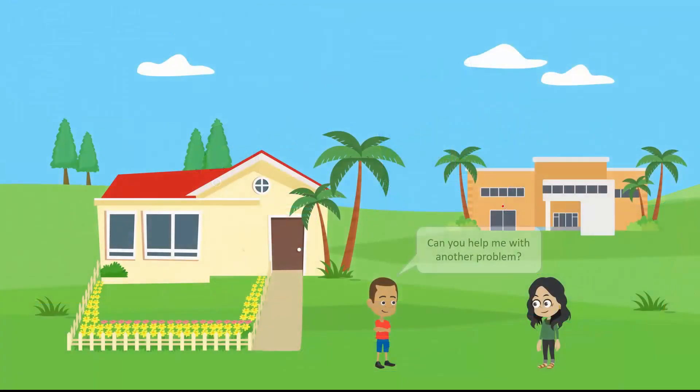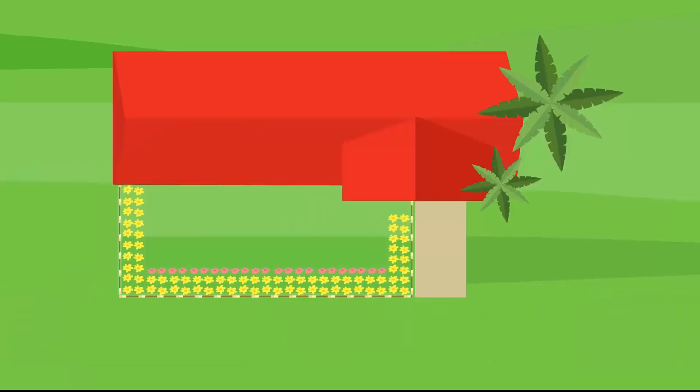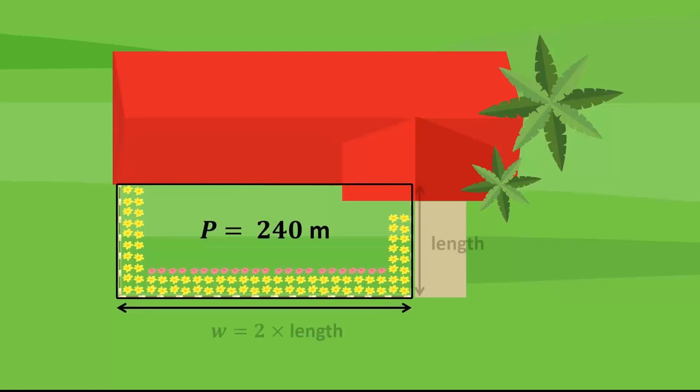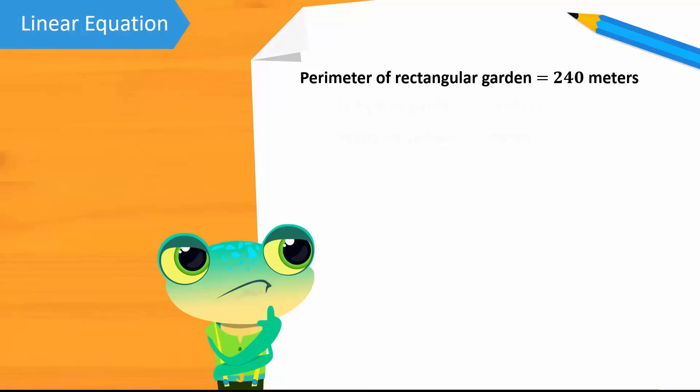Now that I know the cost of my book, can you help me solve another problem, Sara? Sure. What's the problem? My friend told me that his rectangular garden's perimeter is 240 meters and the width was double the length. What do you think is the length and width of his garden? Let's help Sara and Asif with this problem.